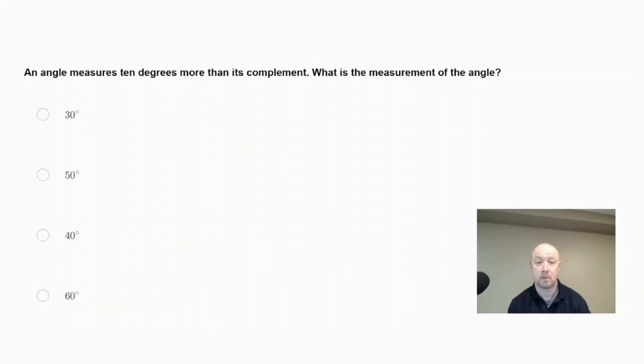An angle measures 10 degrees more than its complement. What is the measure of the angle? We're going to set up some variables here. So our choices are 30 degrees, 50 degrees, 40 degrees, or 60 degrees. Let's let x equal my first angle. Remember, two angles that add up to 90 are considered complementary angles. So my second angle, if it's x's complement, would be 90 minus x. So that would be my second angle.